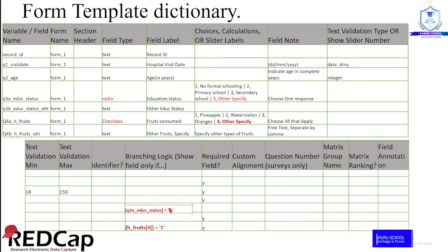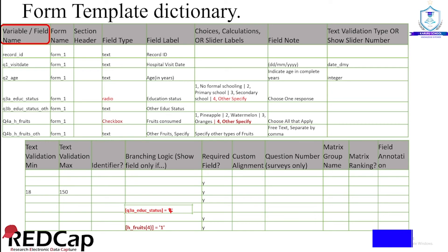Let me take you through the form template dictionary as downloaded from REDCap. The columns are labeled with field names that guide the REDCap platform on how to handle the items. The first column is labeled as the variable or field name — this will include the variable names for your form. Variable names should not have any capital letters and should not start with a number. You can join two or more words to form a variable name using an underscore. The next field is the form name, which identifies the form you are currently using.